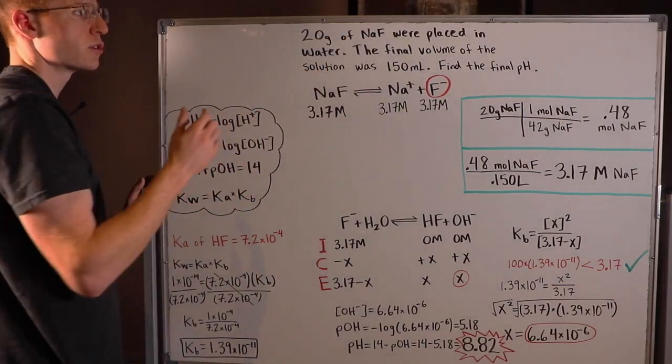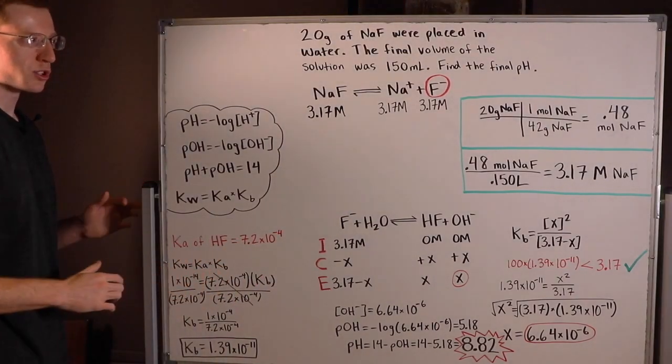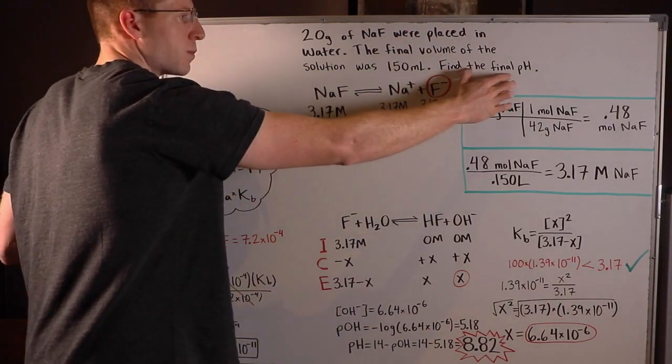20 grams of NAF, sodium fluoride, were placed in water. The final volume of the solution was 150 milliliters. Find the final pH.